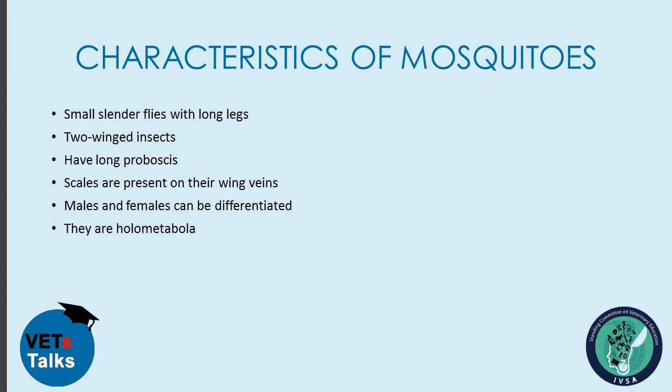Mosquitoes are small, slender flies with long legs. They are two-winged insects — generally, insects in the Order Diptera have two wings, which enables them to fly from one place to another. Mosquitoes have a long proboscis, which is their mouthpart; it projects forward from their head and they use it to bite susceptible hosts. Scales are present on the wings of mosquitoes. The female and male mosquitoes can be differentiated through the form of their antennae. Mosquitoes are holometabola, meaning they undergo complete metamorphosis during development.